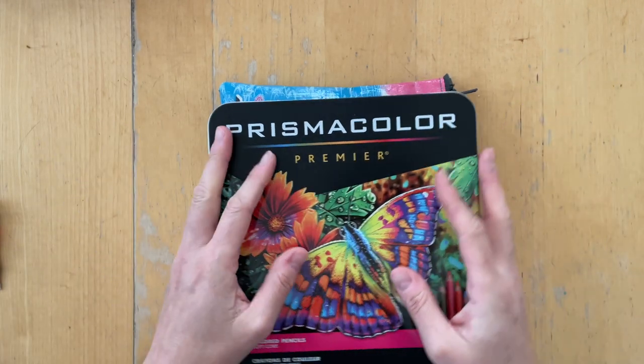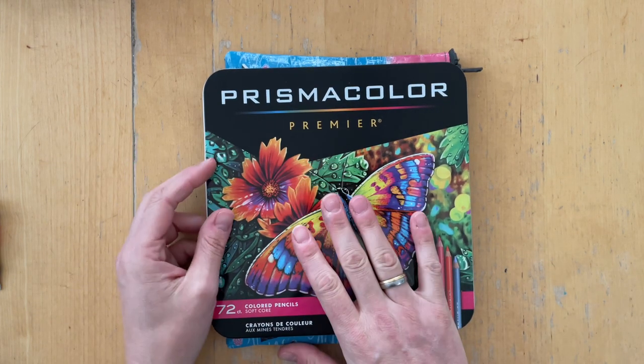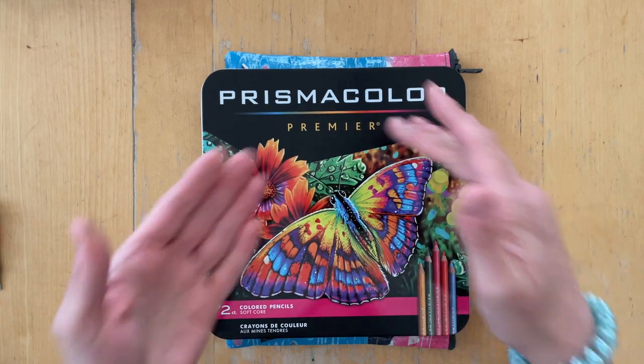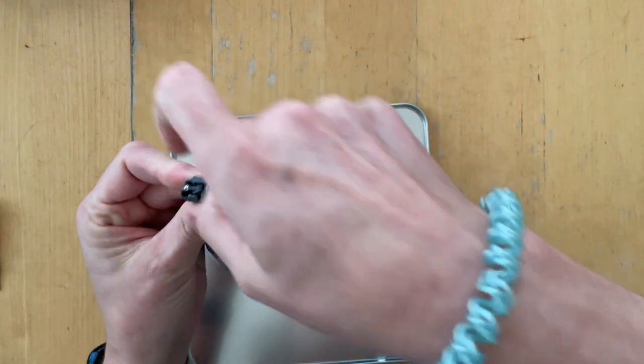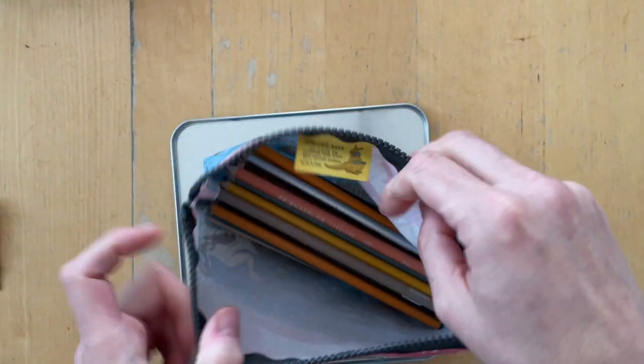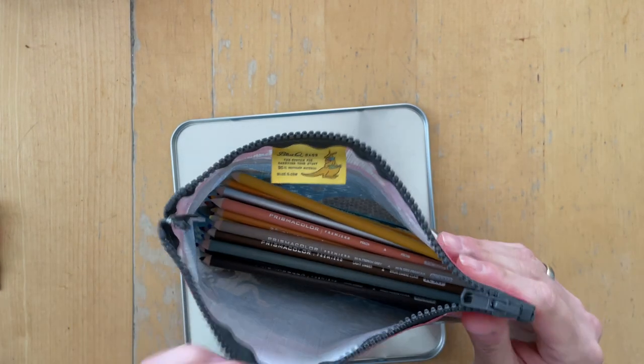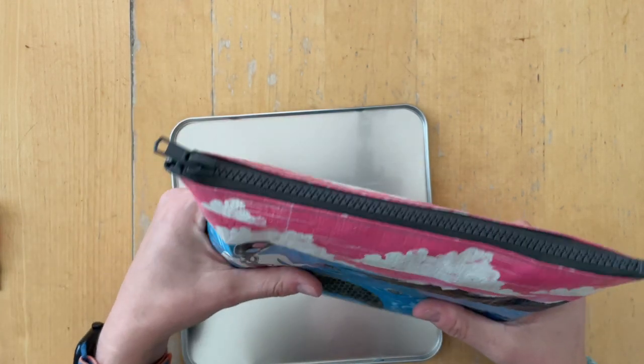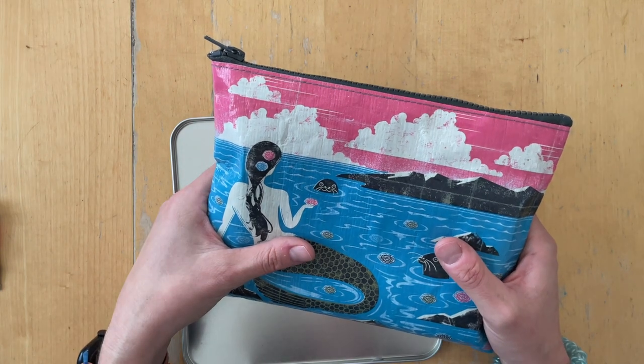As a result of that Blick Art Supplies purchases, I then went onto Amazon and got the 72 count Prismacolor pencils. And those are amazing. I'm keeping them in this blue cube bag. And I have used them, and I can't wait to use them more. They're definitely worth purchasing for me. I really think they add value to the way that I make art.